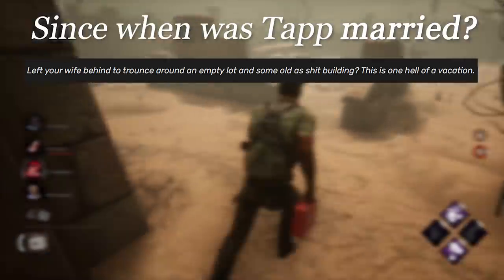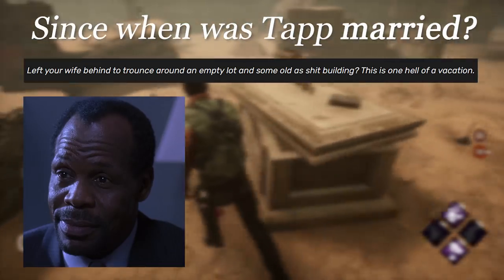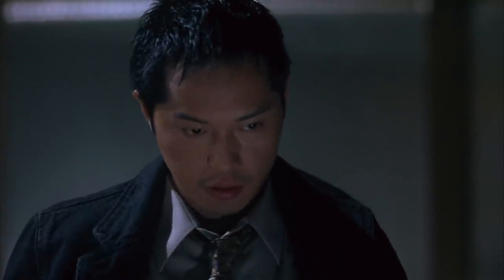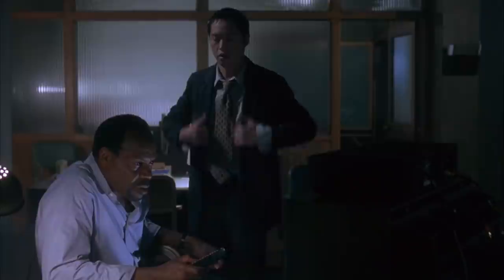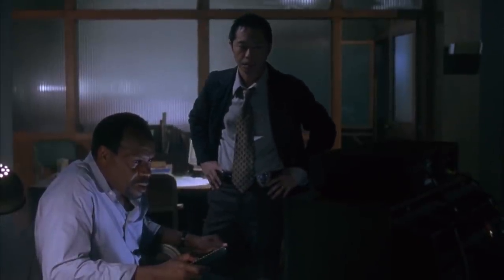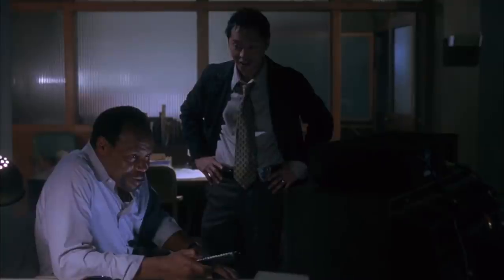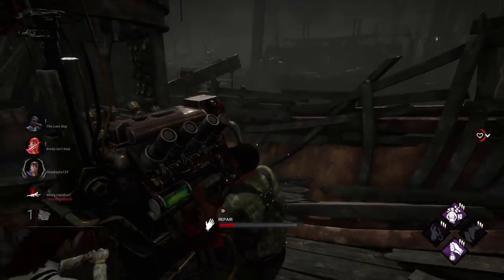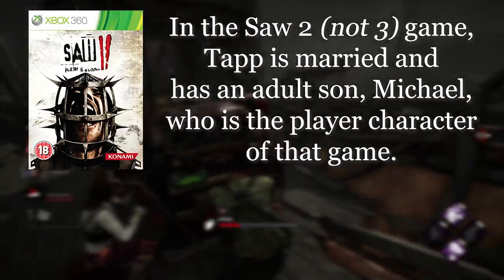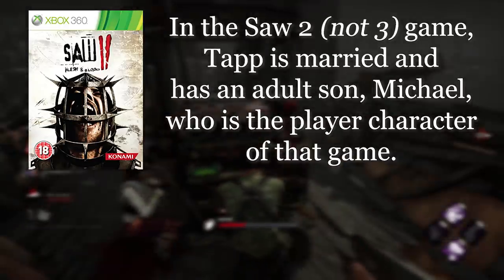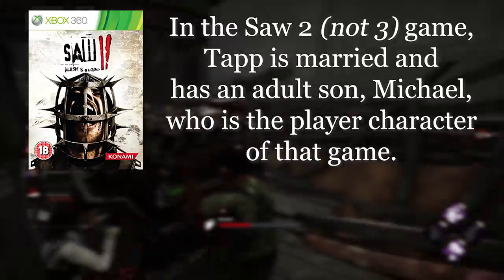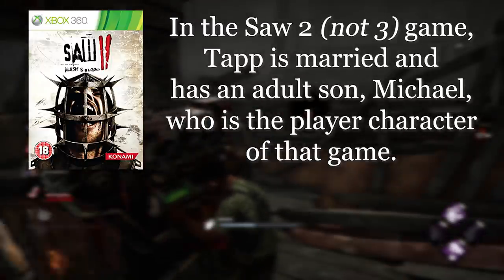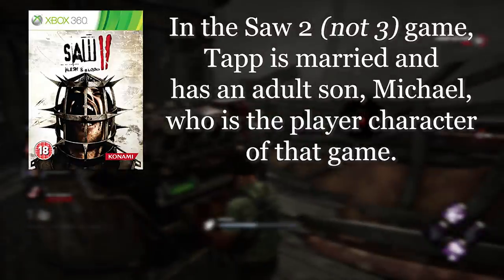Right away there's one great big stinking problem that leaves a bad taste in my mouth: since when was Tapp married? He never mentions his wife or wears a wedding ring in the movie, and when Tapp's wearing himself out watching Amanda's tape over and over again, Sing even lampshades how incredibly single Tapp is as a result of his obsession with his work. Interestingly, this isn't the first time in alternate canons for Saw that Tapp has been married. In the Saw III: Flesh and Blood game, it was revealed that Tapp — the player character for the first game — was divorced from his wife Kara and was an absent father to her son Michael, who would be the subject of his own Jigsaw test as the main protagonist of the second game.